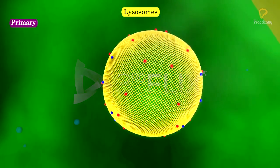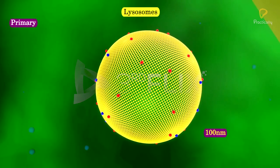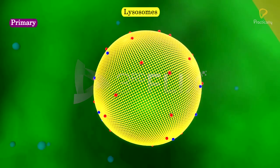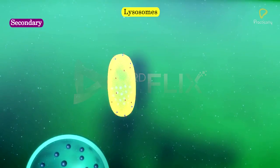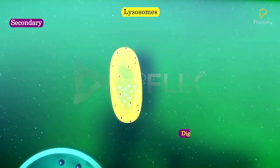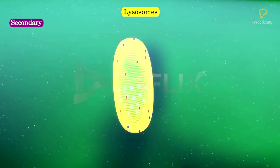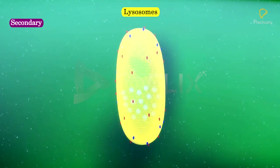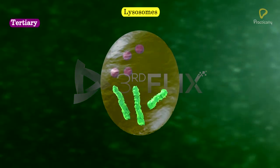Primary lysosomes have inactive enzymes. Secondary lysosomes are also called digestive vacuoles. These lysosomes contain both enzymes and the materials to be digested.